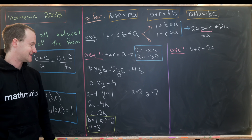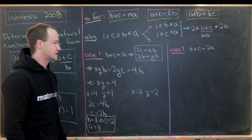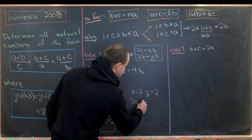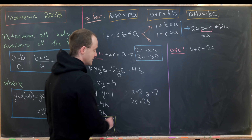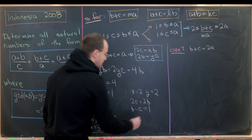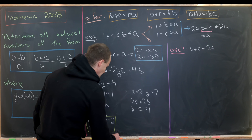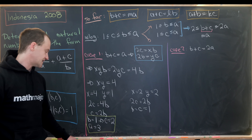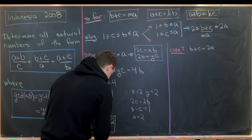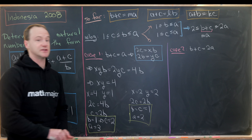For sub-case X=2, Y=2: plugging in gives 2C = 2B, so B = C. Since their GCD is 1, B = C = 1, and then A = B+C = 2. That's our second solution set: A=2, B=1, C=1.